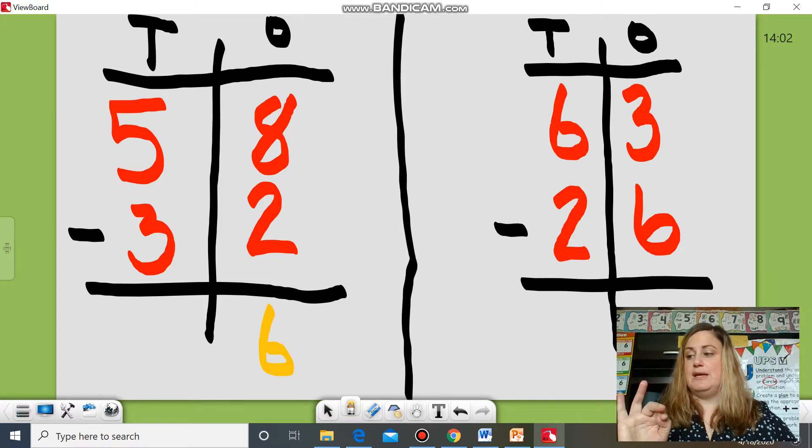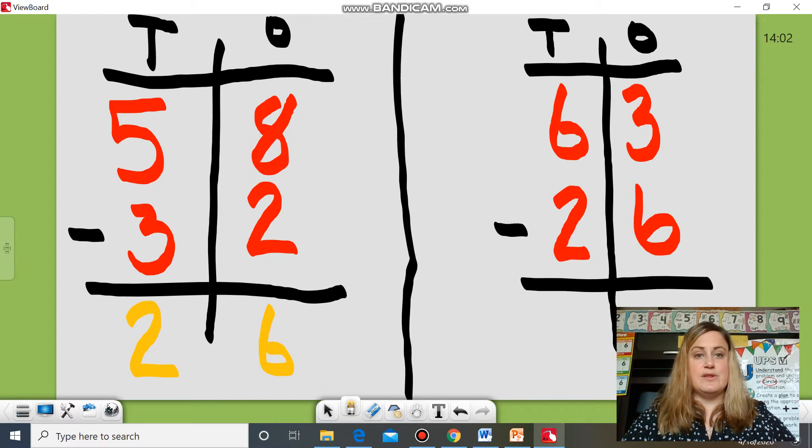So I have five, take away three, I have two left. So my answer is twenty six. So this problem here I didn't have to regroup at all. I just did as is.